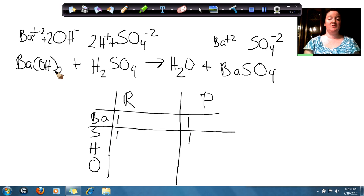On this side I have 2 hydrogens here, plus 2 more hydrogens. So that gives me 4 hydrogens. But on this side I only have 2 hydrogens. That means I need to change the coefficient in front of the water to 2. So now I have 4 hydrogens on that side.